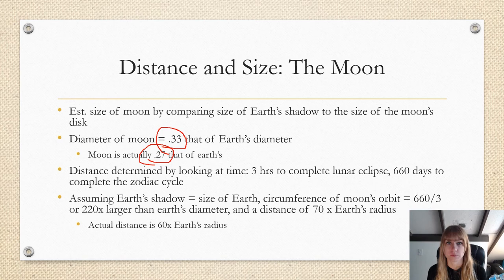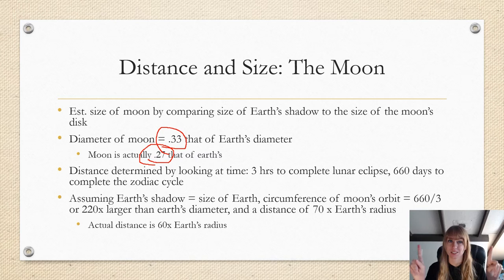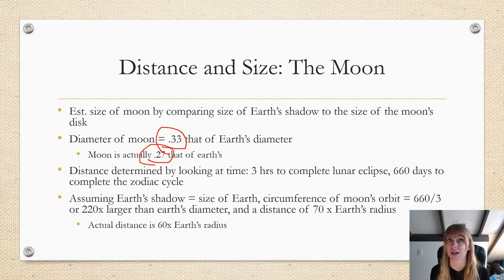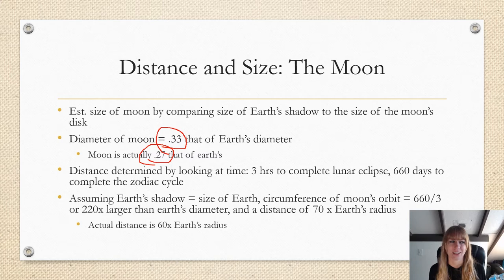He also determined the distance of the moon by realizing it took three hours for the moon to complete its passage through the Earth's shadow during a lunar eclipse, and that it took the moon 660 days to complete a cycle through the zodiac. He assumed Earth's shadow was about the size of the Earth, so the circumference of the moon's orbit is 660 over 3, or 220 times larger than Earth's diameter, with a distance 70 times Earth's radius. Again, not far off. The Earth-Moon distance is actually 60 times Earth's radius. So it's pretty cool what people from the ancient world were able to figure out compared to now where we have all this technology. They pretty much had either a sextant or they would take a stick and measure the shadow, and measure that. It was pretty fascinating.